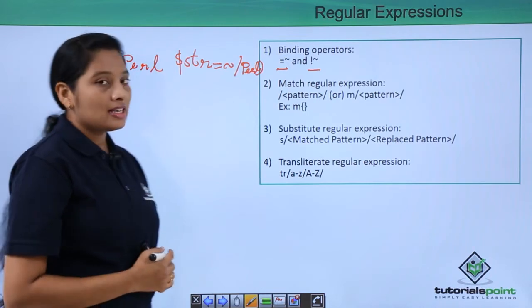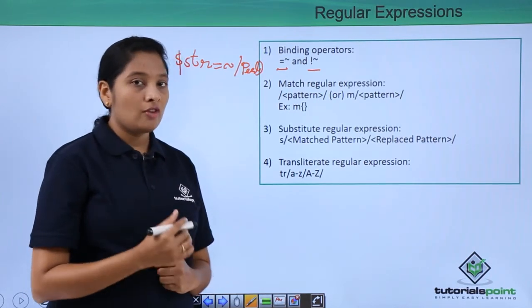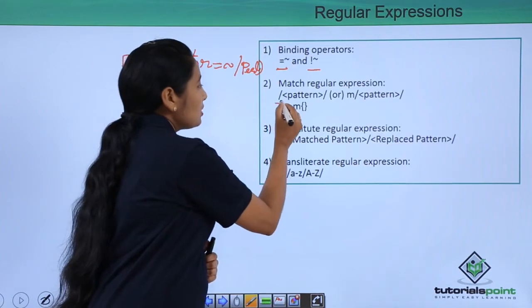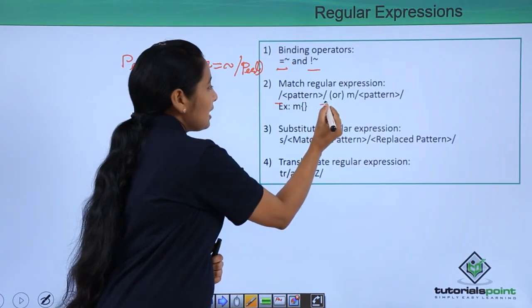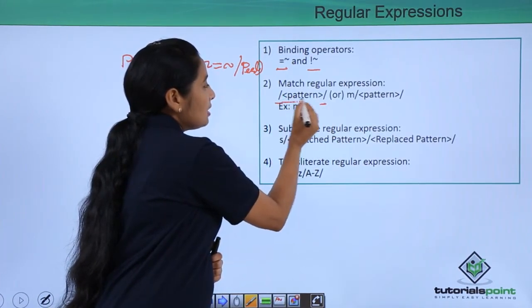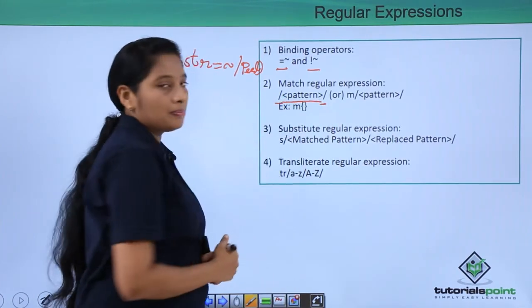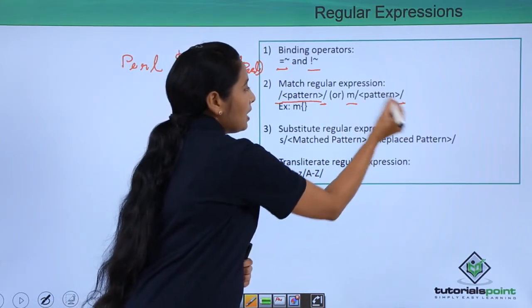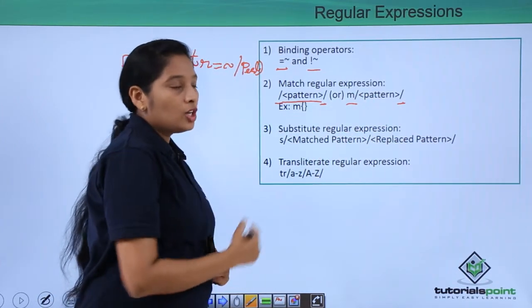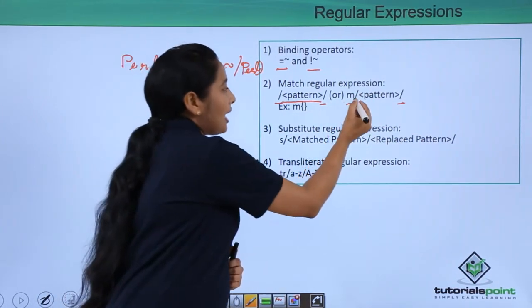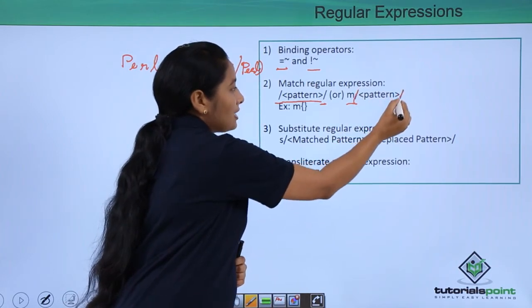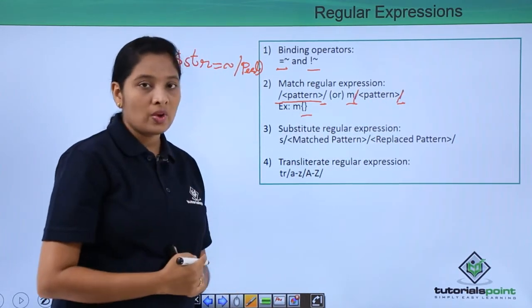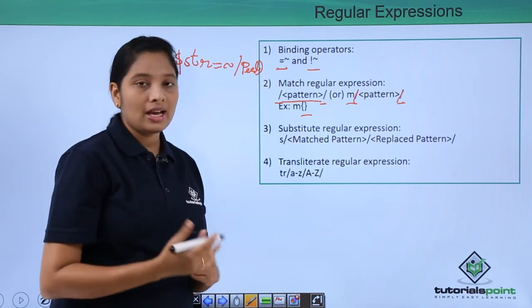To match a certain pattern, you have to use matching operators — that is by using two forward slashes enclosing the pattern, or you can use m slash. When you are using m, you can use any kind of characters, not only slash; you can use curly braces, square brackets, or any other character.